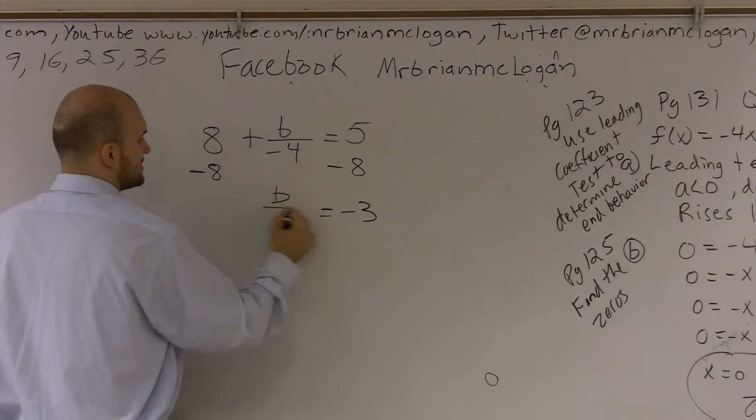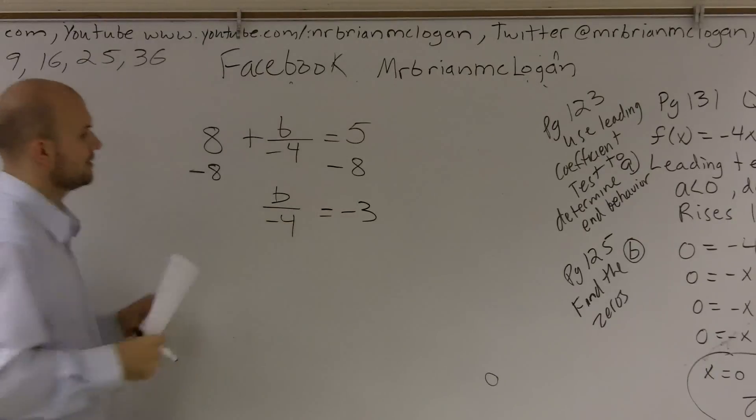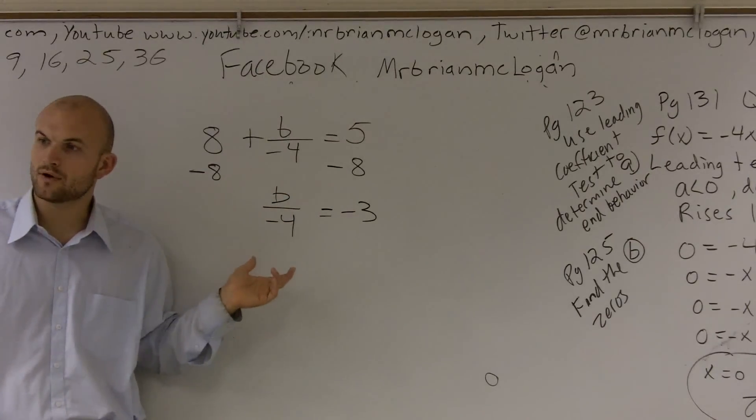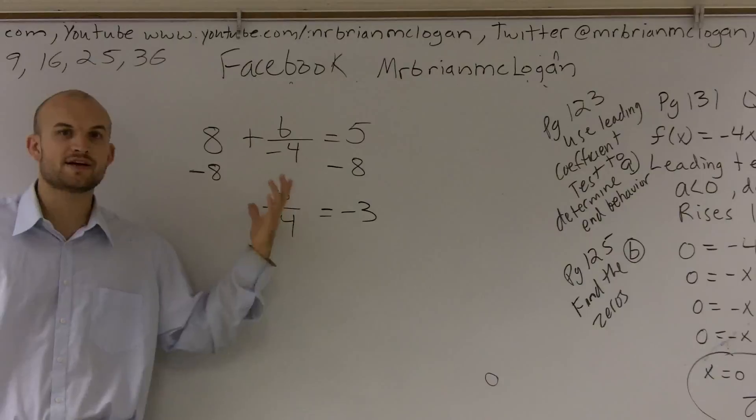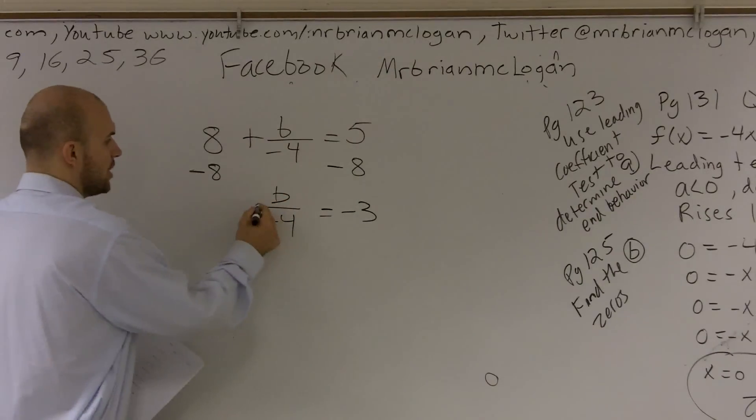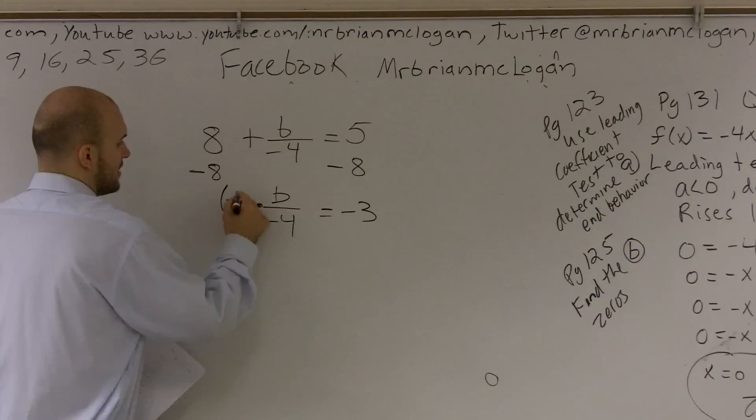And I'm left with b divided by negative 4. Now I have my variable being divided by negative 4, so to undo division, I need to multiply by negative 4. And a lot of times when we're multiplying, we want to write it as a fraction.